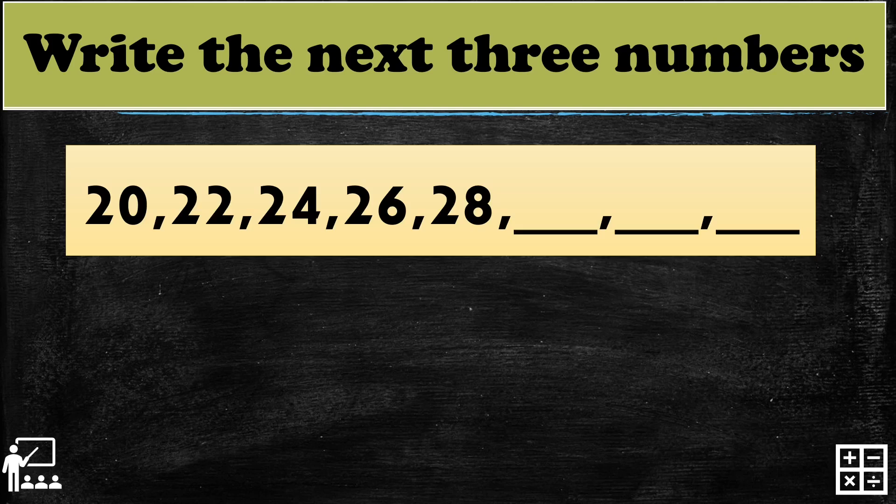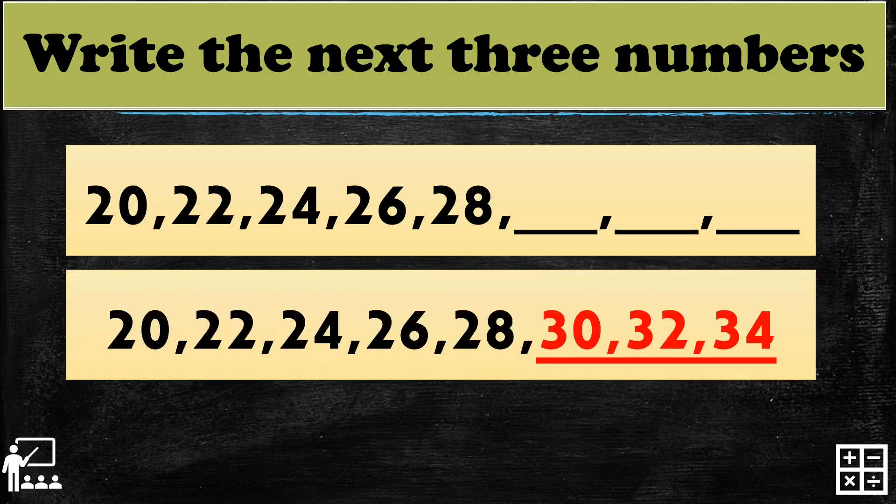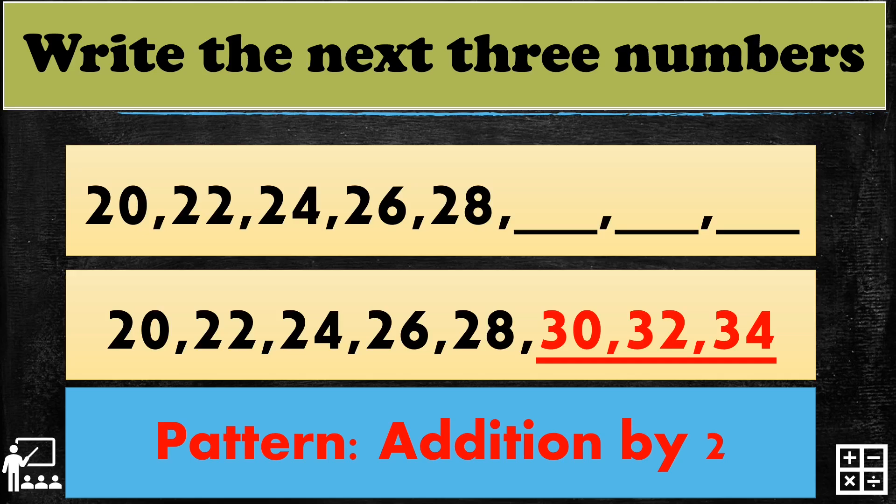For the next activity, I have the sequence: 20, 22, 24, 26, and 28. Can you guess the three next missing numbers? Great job — it's 30, 32, and 34. The pattern used in this sequence is addition by 2.